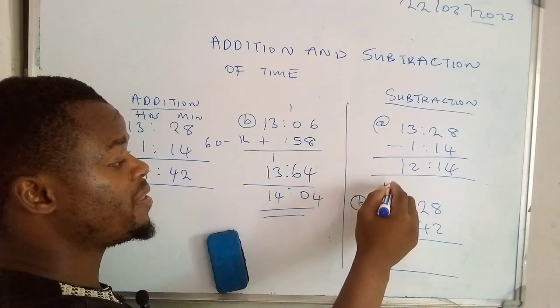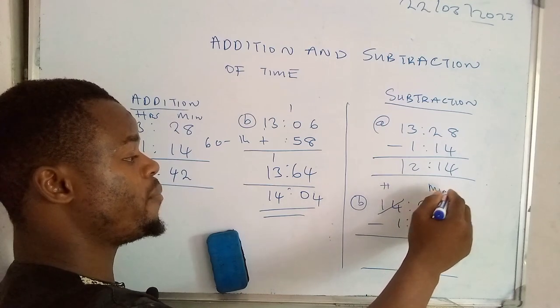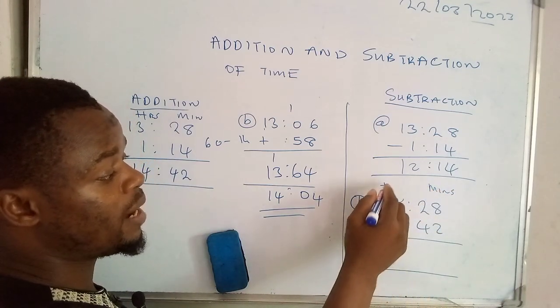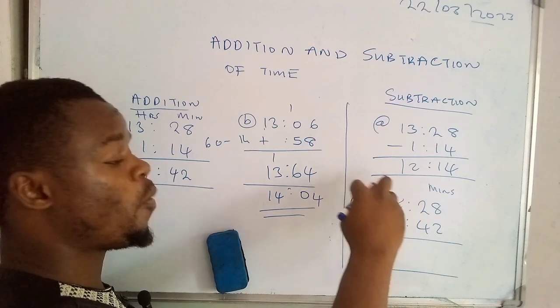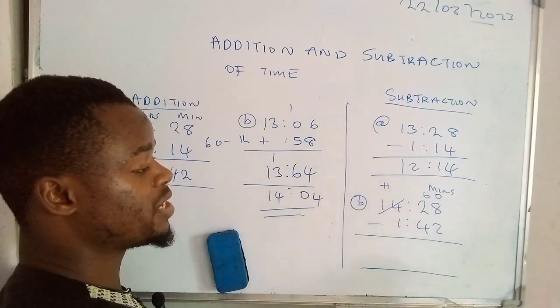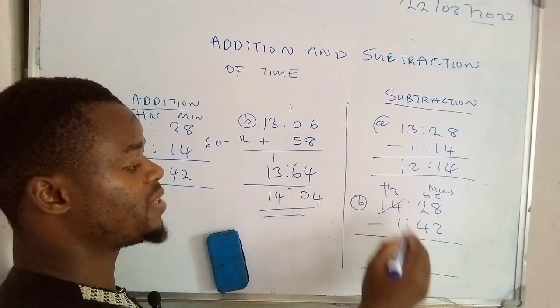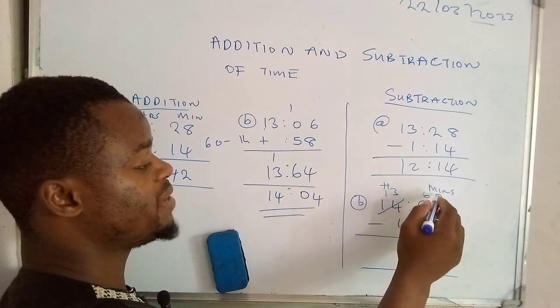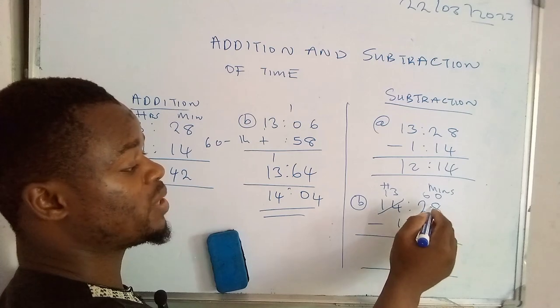Remember, these are hours, these are minutes. So now since these are hours, when we get one, that one hour we're getting is actually 60 minutes. So here we're going to remain with 13. 60 minutes will be added to those 28 minutes which are on top, so we're going to have 88 minutes.